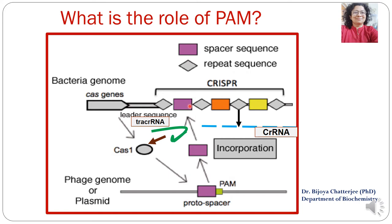The protospacer region will be incorporated into the CRISPR locus of the bacterial genome. The bacterial genome also consists of various regions. Let us see the regions one by one.